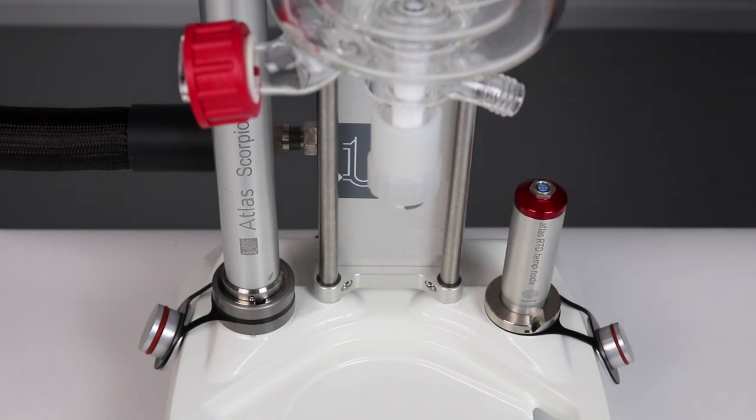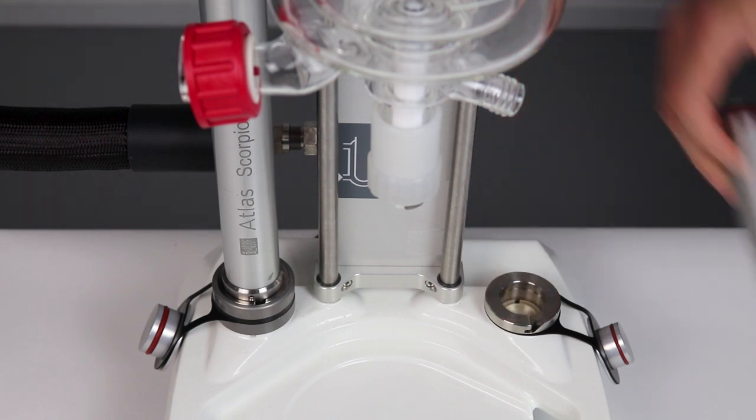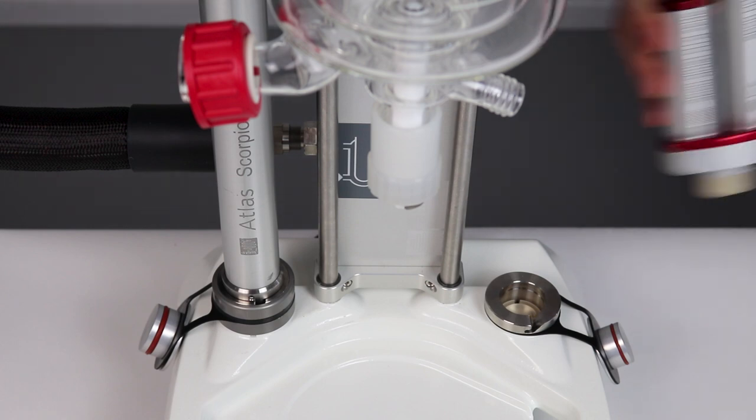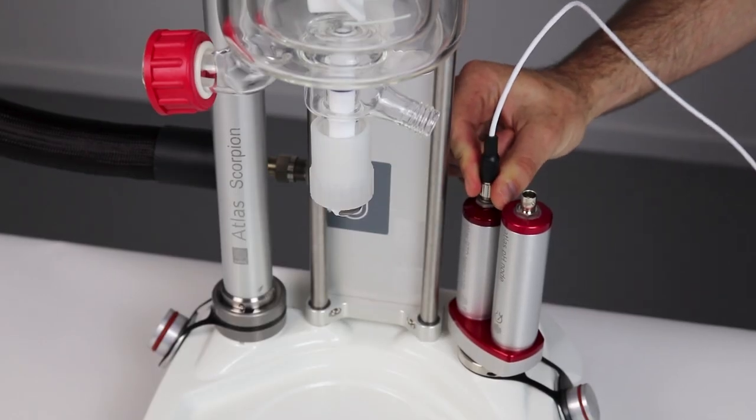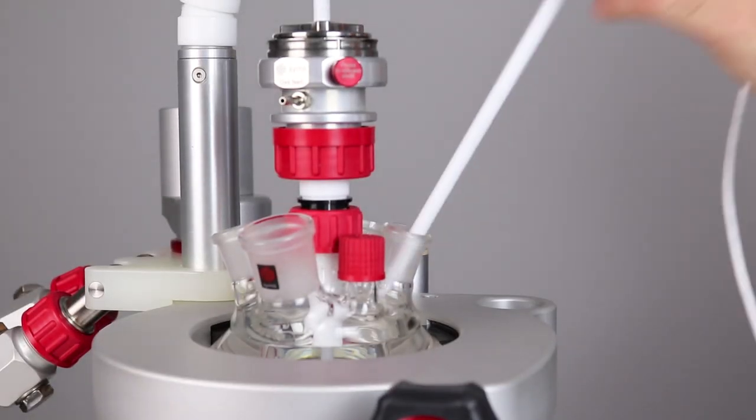And finally pH, turbidity, temperature and pressure can be measured using nodes that click directly into the base unit with up to six sensors being able to be measured and recorded simultaneously.